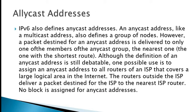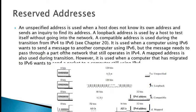IPv6 also defines the anycast address. Like a multicast address, an anycast address defines a group of nodes. However, a packet destined for an anycast address is delivered to only one member of the anycast group — the nearest one, the one with the shortest route. One possible use is to assign an anycast address to all the routers of an ISP that covers a large logical area in the internet.